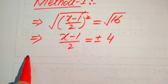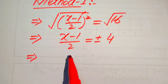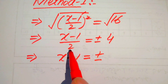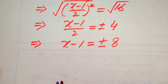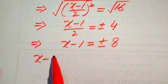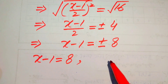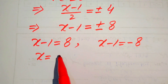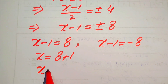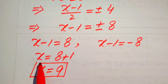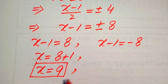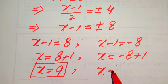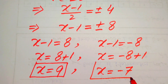In the next step, we move the 2 to the right-hand side. Since it was dividing on the left, it multiplies on the right, giving us plus-minus 4 times 2, which becomes plus-minus 8. We then split into two cases: in the first case, x minus 1 equals positive 8, so x equals 8 plus 1, giving x equals 9. This is the first root.